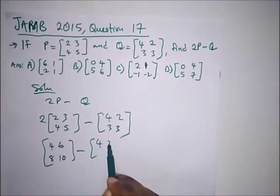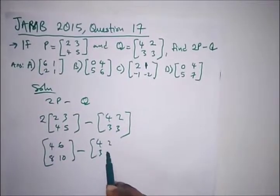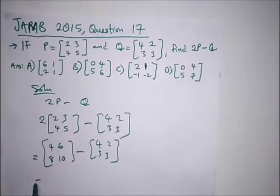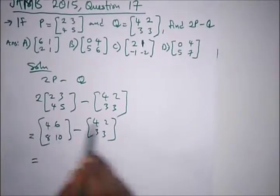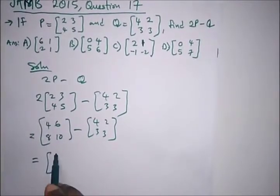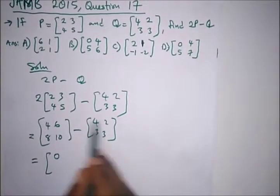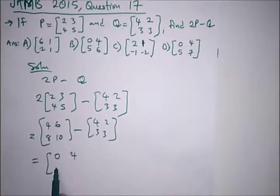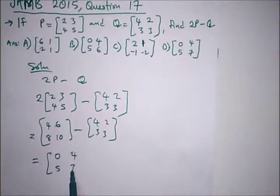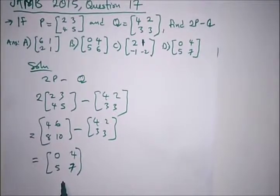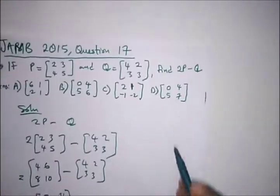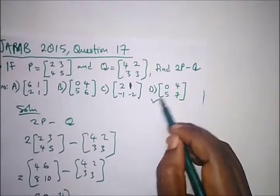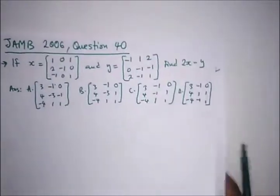Now subtracting the matrix four, two, three, three from it. We have: four minus four gives zero, six minus two gives four, eight minus three gives five, and ten minus three gives seven. So our answer here is option D.